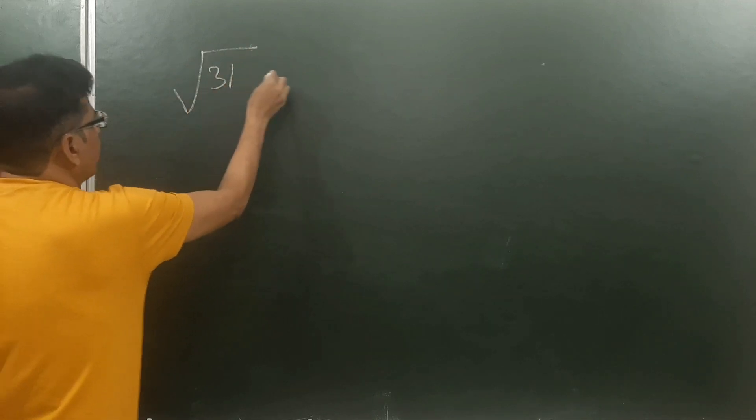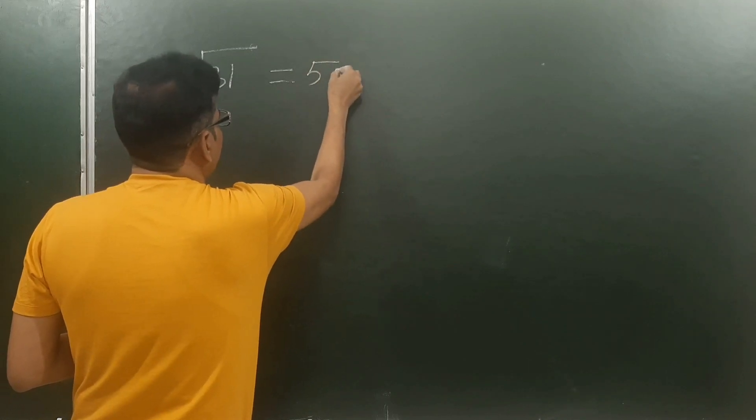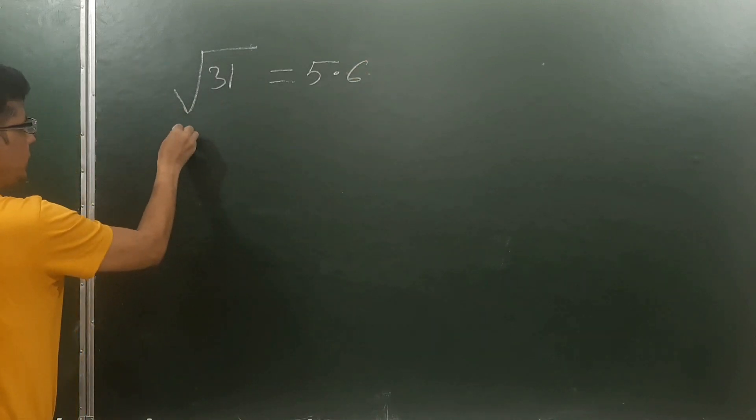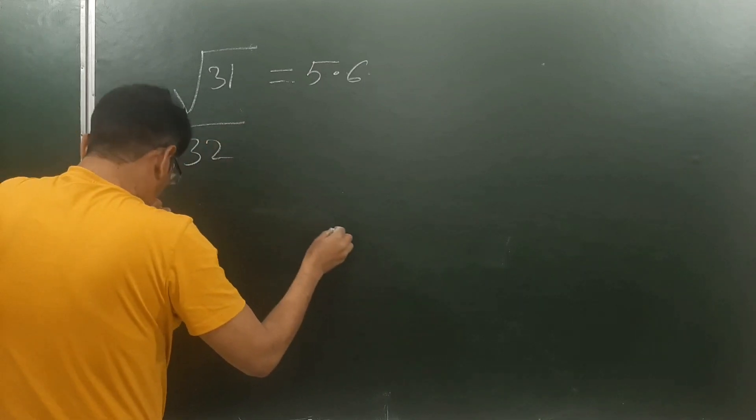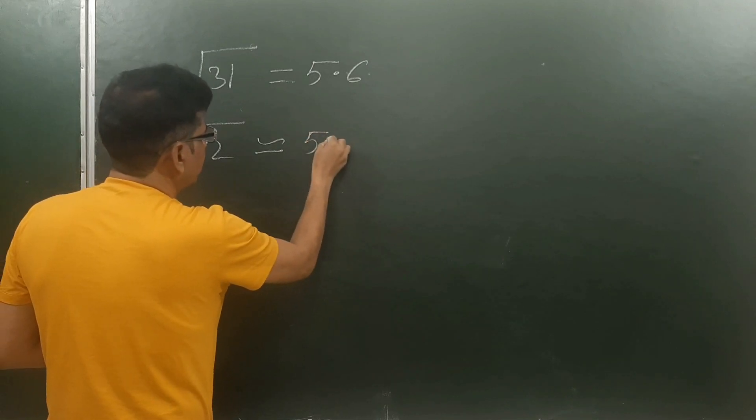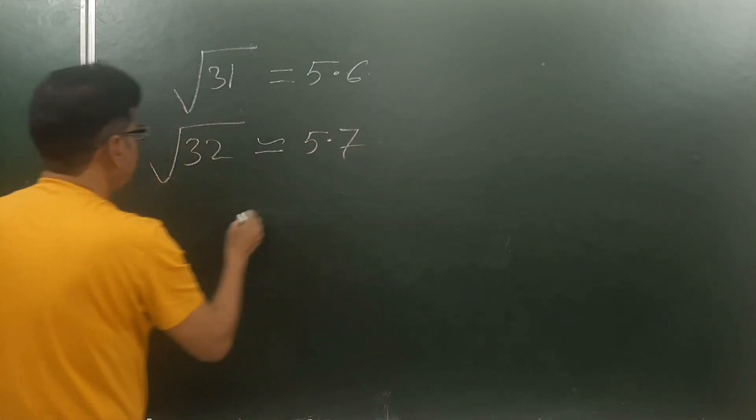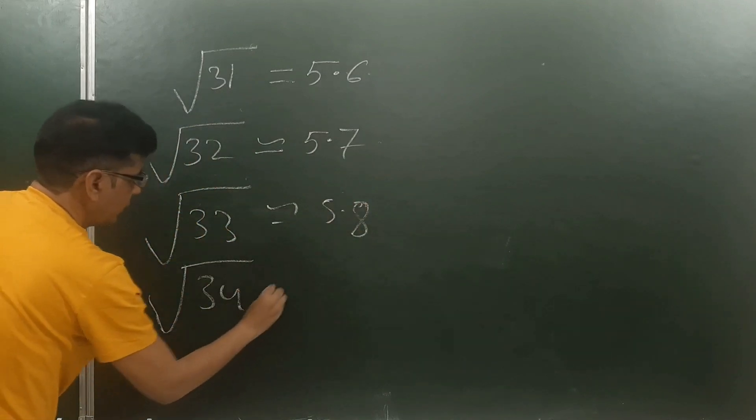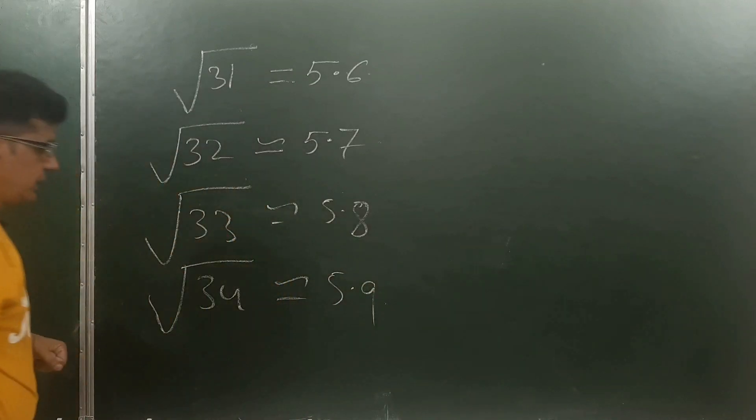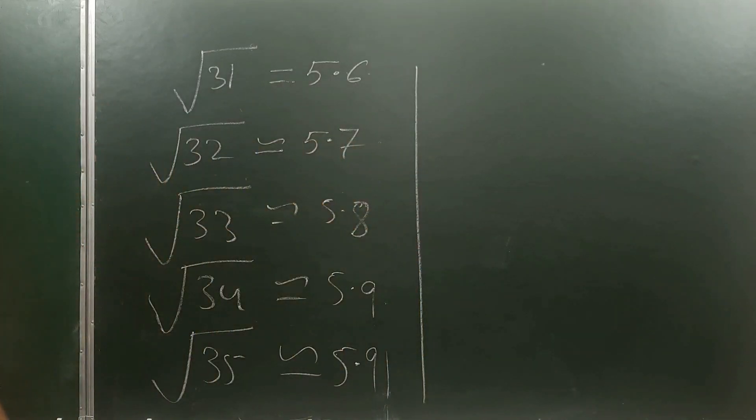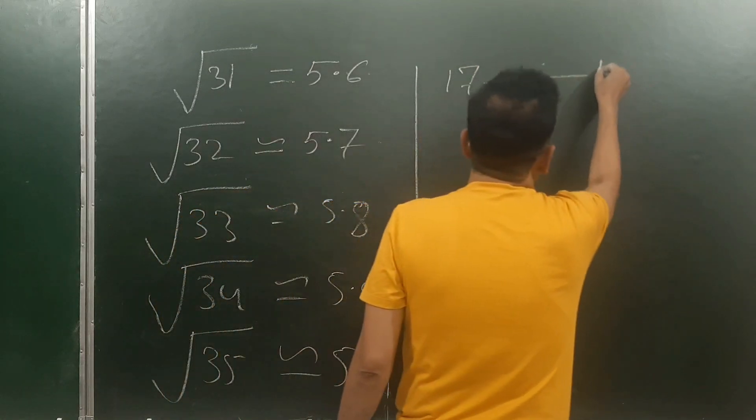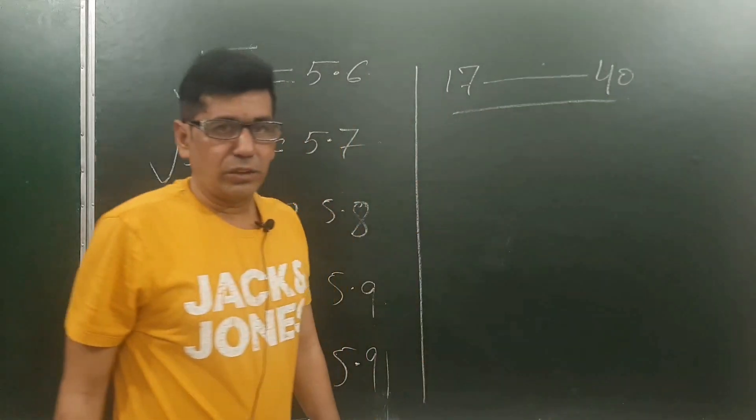Take other examples. Square root of 31: that is 5 point - how much is the difference between 25 and 31? This is 6, so 5.6. Square root of 32 is 5.7. Square root of 33 equals 5.8. Square root of 34 will be approximately equal to 5.9. So in this way you can calculate the square root of two-digit numbers lying between 17 and 40 by a very easy and very short magical trick.